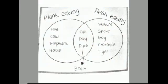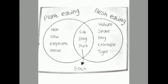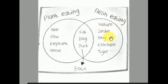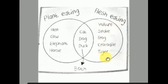Now we will group the animals: plant-eating, flesh-eating, and both. Examples for plant-eating animals: Hen, Cow, Elephant, Horse. Flesh-eating animals: Vulture, Snake, Frog, Crocodile. Animals that eat both: Cat, Dog, Duck.